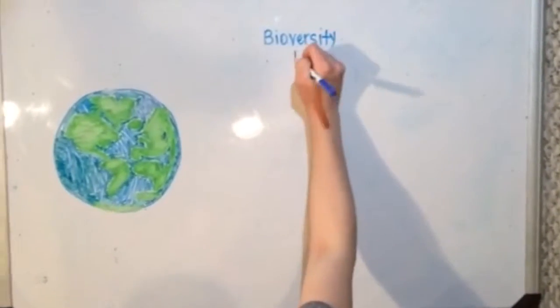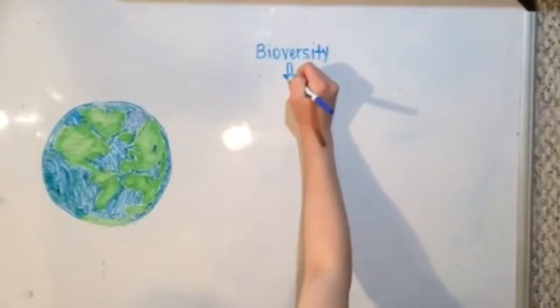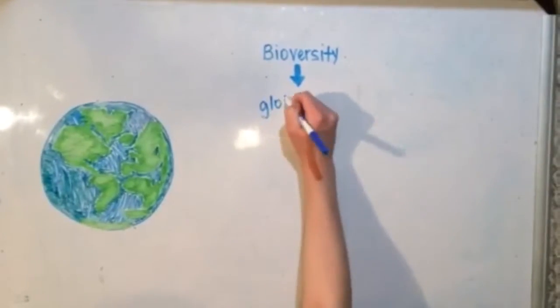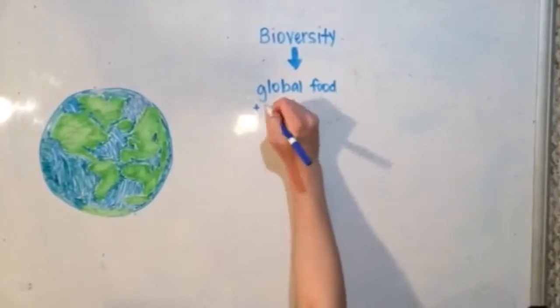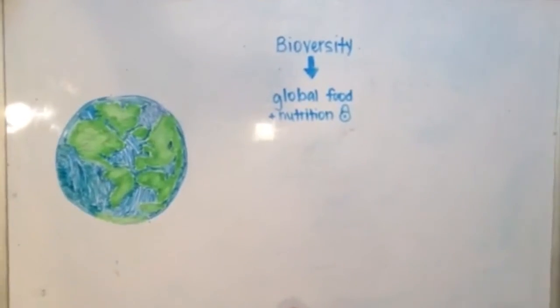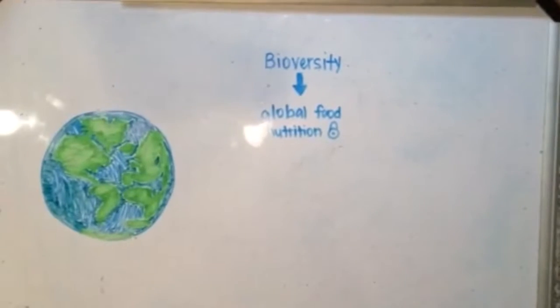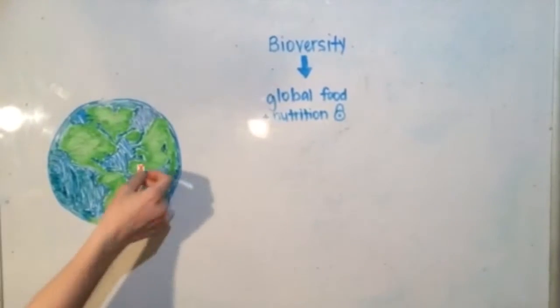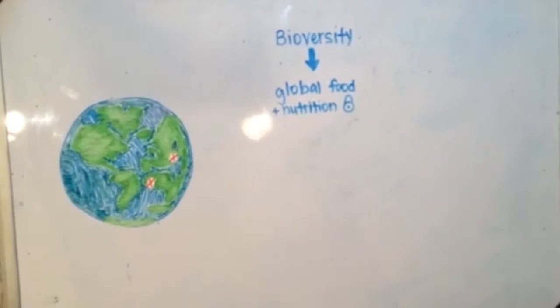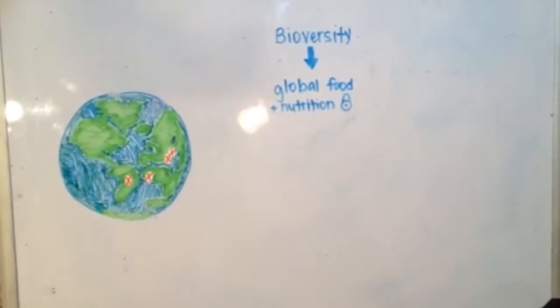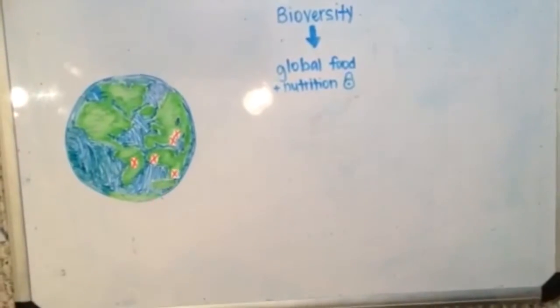However, there are many well-known efforts outside of Canada, such as Bioversity, an organization working towards sustainable food and nutritional safety. Their vision is to conserve agricultural biodiversity while nourishing people and sustaining the planet. They are currently focused in West and Central Africa, Southeast Asia, Central and South Asia, Central and South America, as well as East and Southern Africa.